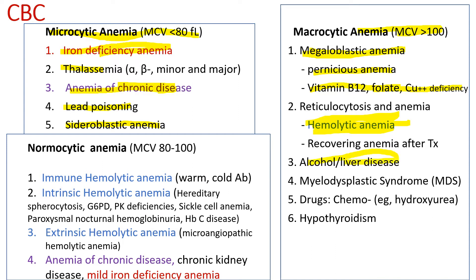Alcoholism or alcoholic liver disease is associated with macrocytosis, often without anemia. Alcohol appears to be toxic to the bone marrow. When you see a patient with a high MCV without any medical problems, ask the patient if he drinks alcohol. Patients with MDS, myelodysplastic syndrome, frequently show macrocytic anemia. Chemotherapy drugs often cause macrocytosis because of their inhibition of DNA and cell division. Patients with hypothyroidism occasionally present with microcytic anemia.